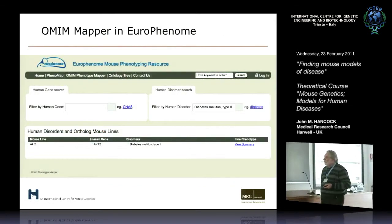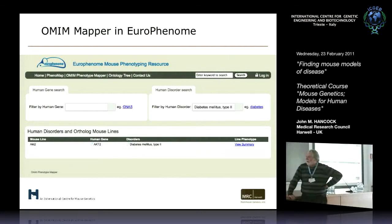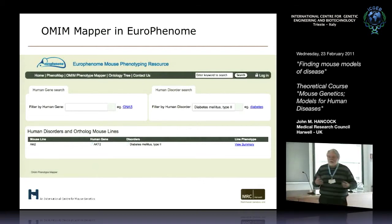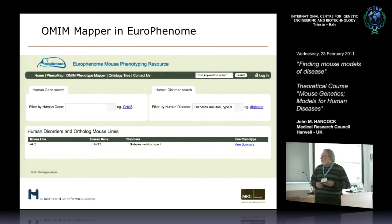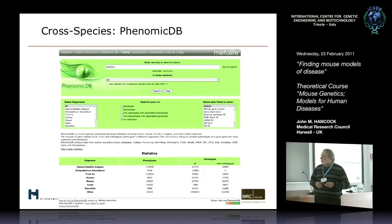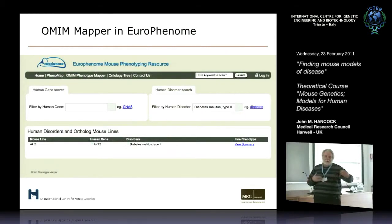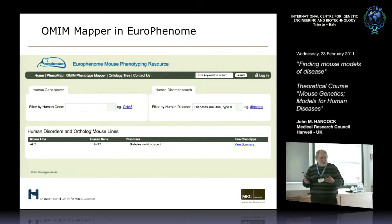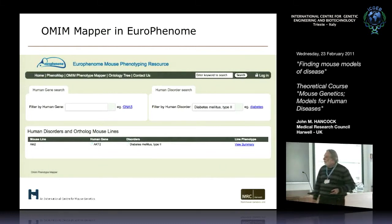We've just recently introduced something similar in Europhenome, although this uses gene mapping rather than term mapping - term mapping is beyond what we can do yet. What it does is take disease associations in humans, map them back into the Europhenome dataset, and identify genes associated with diseases in humans, showing what the results are in Europhenome. You can search by human gene - generally human and mouse gene names are very similar, in theory the same, though not always.